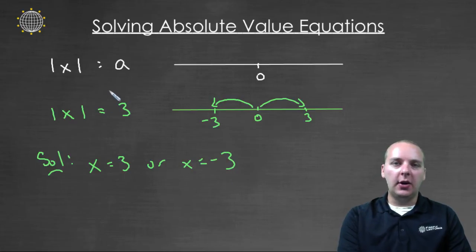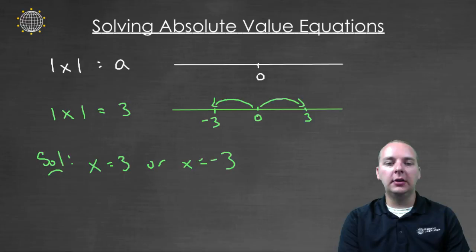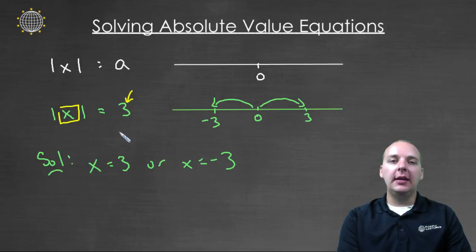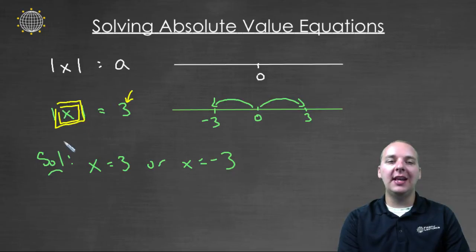After talking about those, I think I see what the general pattern is going to be. What we're going to do is take whatever is inside the absolute values and set it equal to this number on the right or its negative, so three or negative three. The only catch is you might have something more complicated than just an x inside the absolute value, and that's totally fine.